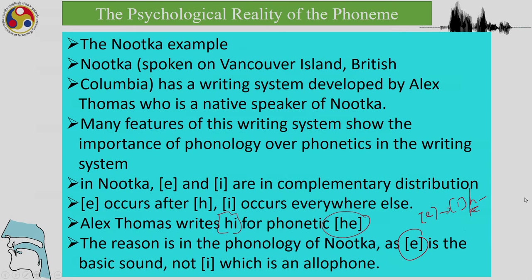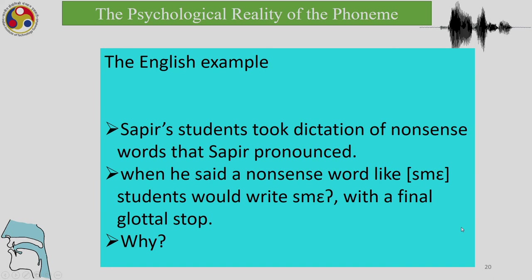There is also an English example from Sapir's paper. Sapir's students took dictation of nonsense words; when he said a word like 'smir,' students would write it with a final glottal stop. The reason lies in the phonology of English: lax vowels do not occur in final position in monosyllabic words. In English, either tense vowels, long vowels, or consonants occur in final positions in monosyllables.